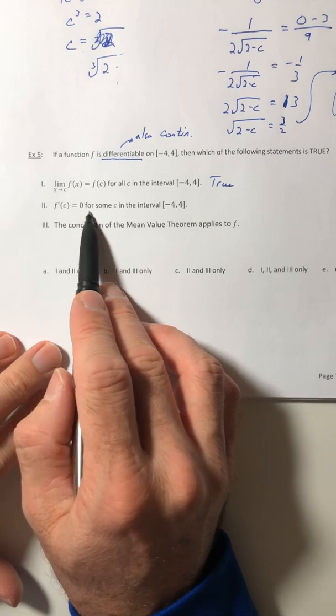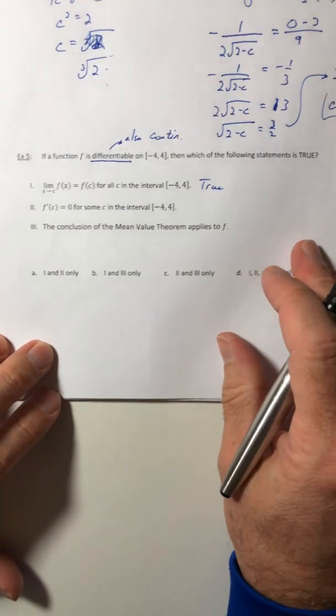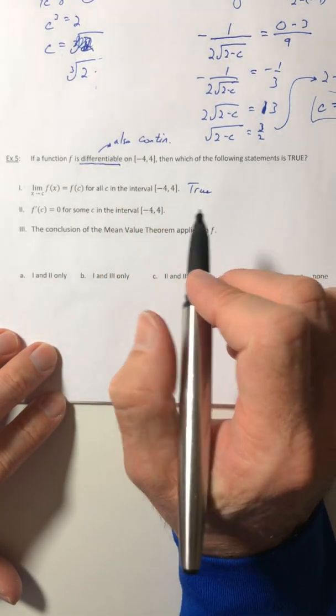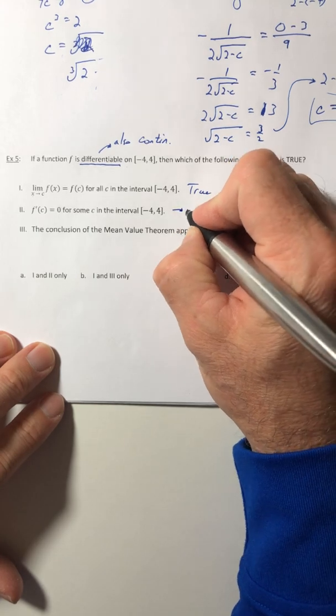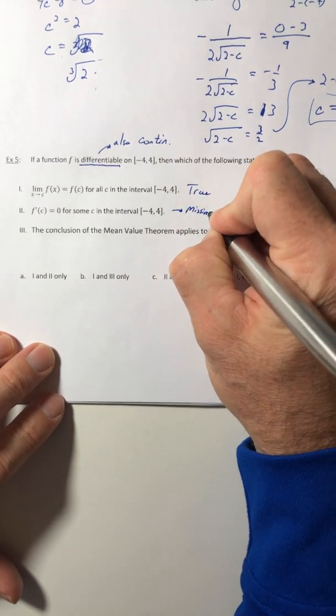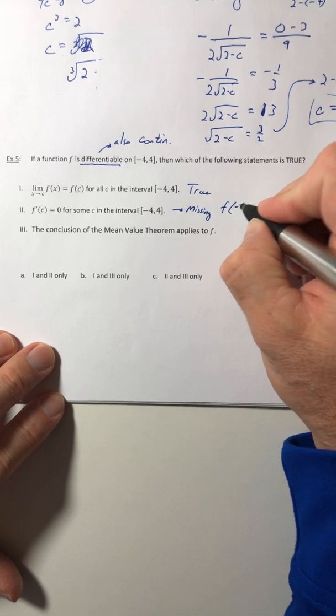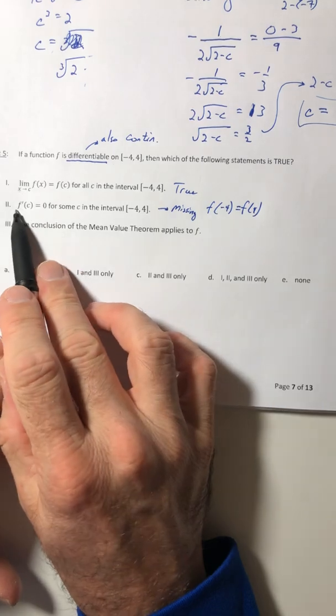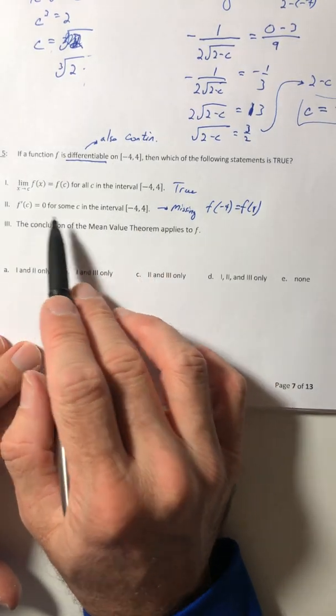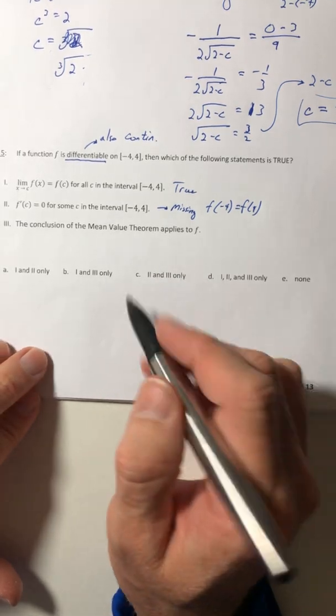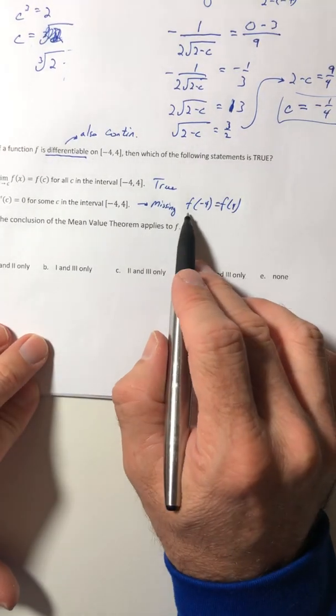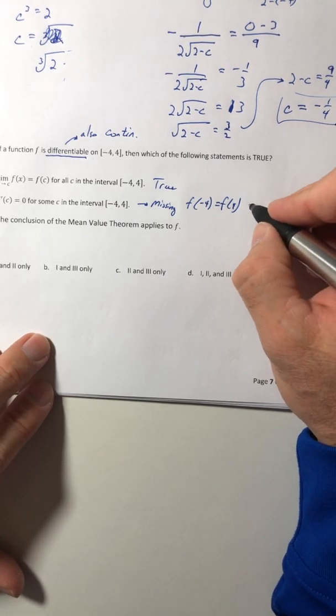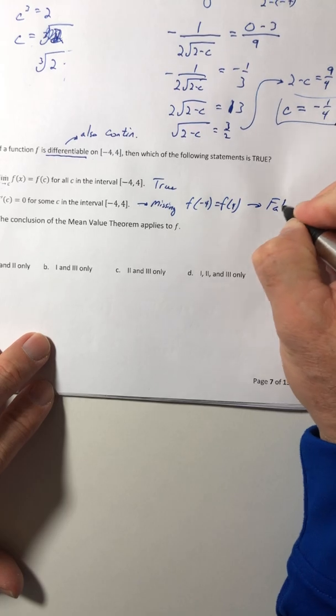Okay, second statement. The derivative is zero for some c in the interval. So you know it's continuous, it's differentiable, but you're missing something. You don't have the f of negative four equals f of four. So right here, they've really disguised a Rohl's theorem statement to see if you knew how to apply it. So you're missing that third criteria for Rohl's theorem. So it might be true, but it's not guaranteed, which means it's going to be false.